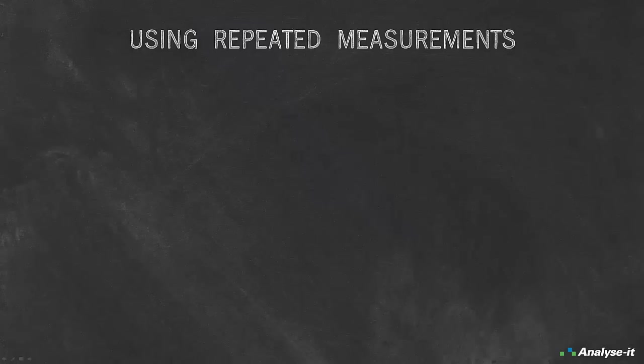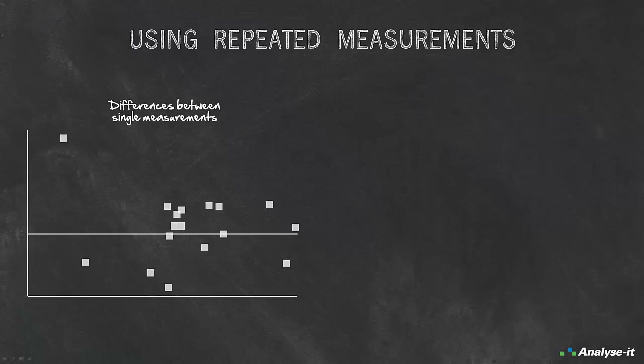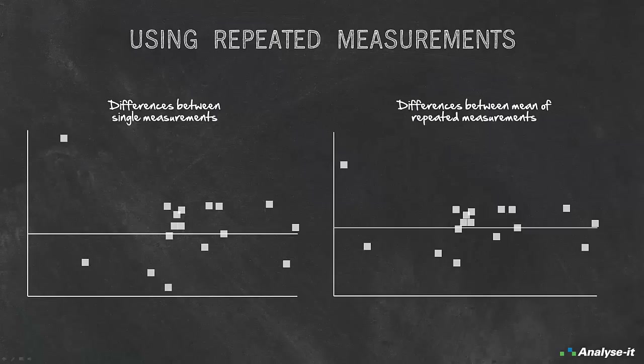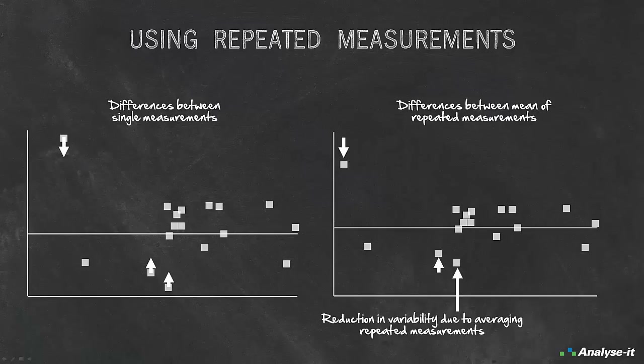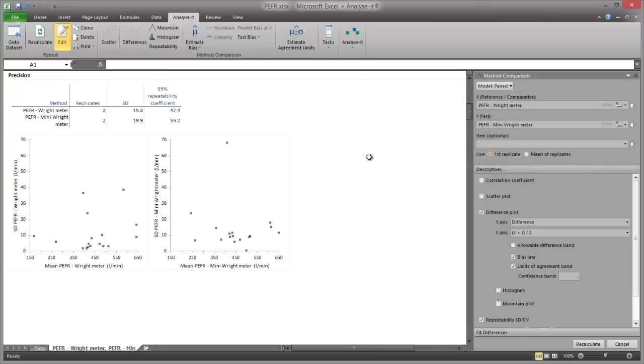Using repeated measurements: when replicates are made for each subject, it is inefficient to estimate average bias and limits of agreement using only the first measurement rather than all measurements. If replicates are available, it is sensible to use the mean of the replicates to estimate average bias. However, when estimating the limits of agreement, the reduction in standard deviation due to averaging of the measurements must be considered and adjusted for if necessary.